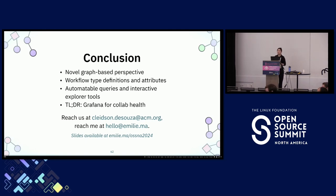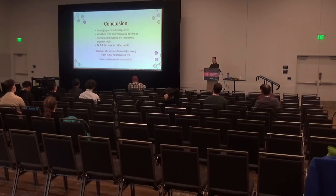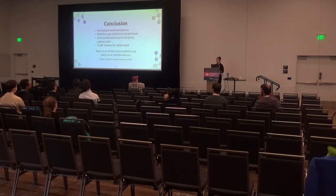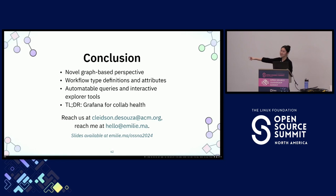An audience member asks about cross-project workflow types—inter-project upstream or downstream patterns. Emily says that's a good callout they haven't thought about, but they have thought about understanding workflow types in sequences, which might be a good research direction. Another audience member asks if there's going to be a paper—Emily confirms one was just accepted to FSE 2024 the previous day. She says she can link it to the slides.